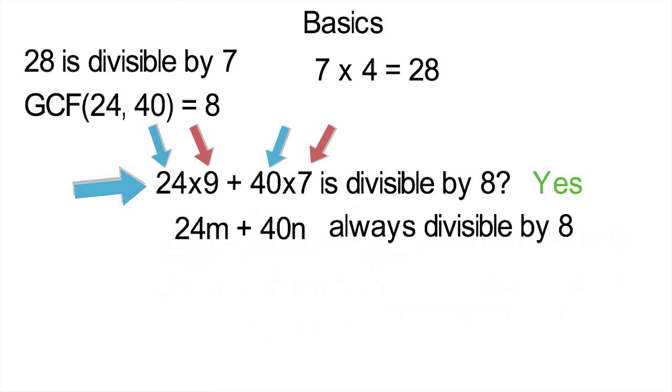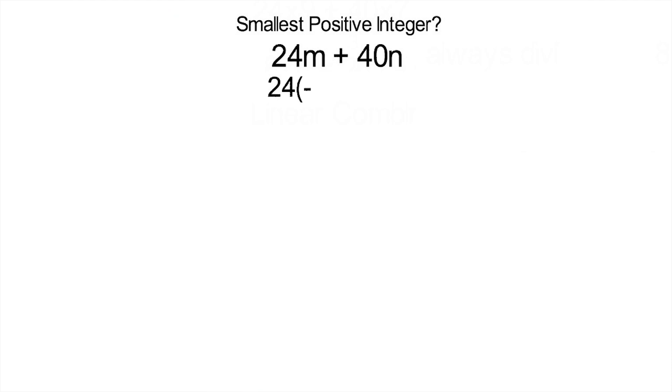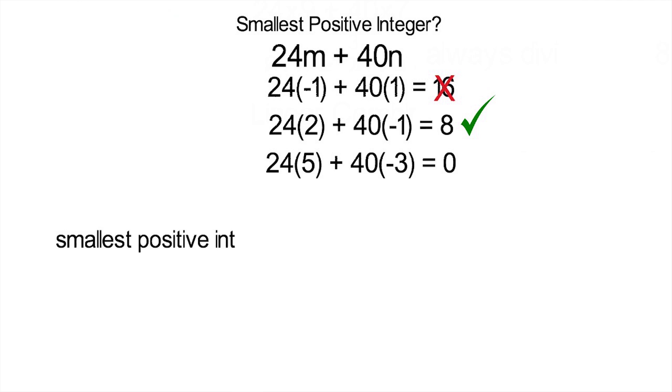Now, here's something you probably don't know yet. What is the smallest positive integer you can get from this? If we set m to negative 1 and n to 1, then do the addition, we get 16. But if we set m to 2 and n to negative 1, we get 8, which is our smallest one now. So 16 won't be our answer. Maybe we set m to 5 and n to negative 3. Then we get 0, but we are only looking for the smallest positive integer. Therefore, 0 and negatives don't count. Now, the answer to this is actually 8. You won't find anything smaller than that. The smallest positive integer will actually always be the greatest common factor of the two numbers you are doing the linear combination of. Remember that for this next puzzle.